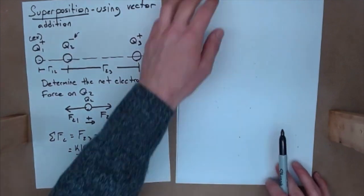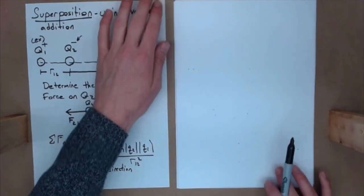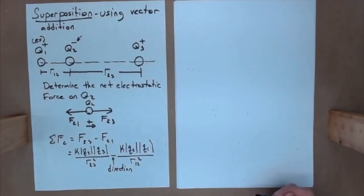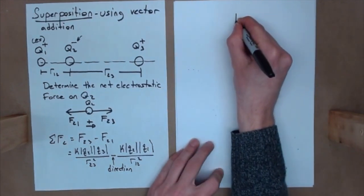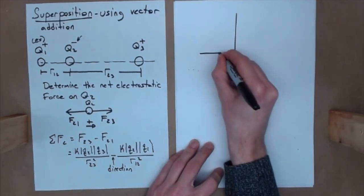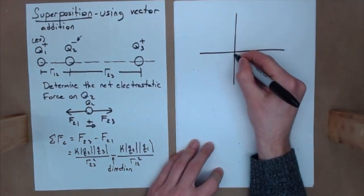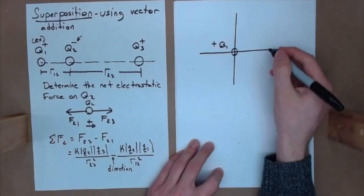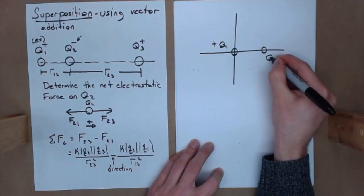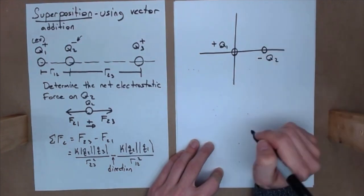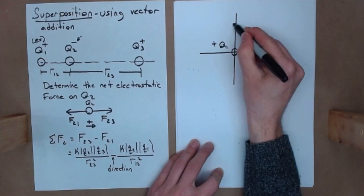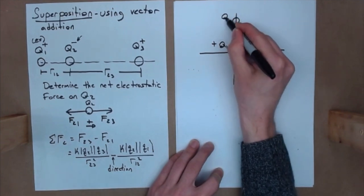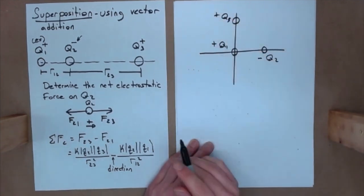Now, superposition extends past a one-dimensional problem. And we can actually have two-dimensional problems with superposition. And I'm not going to go into the details because, again, this is all stuff that you're familiar with. Imagine a two-dimensional grid like this. If I put a charge here, Q1, and I tell you Q1 is positive. I put a charge here, Q2, and I tell you Q2 is negative. And I put a charge here, Q3, and I tell you Q3 is positive.